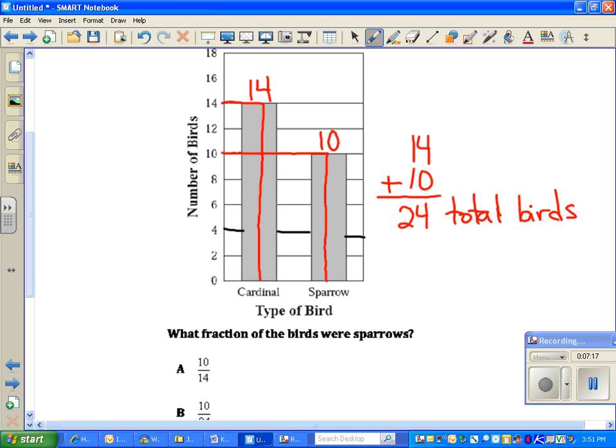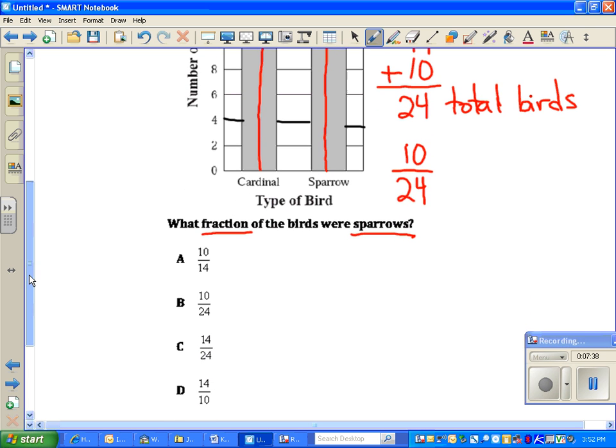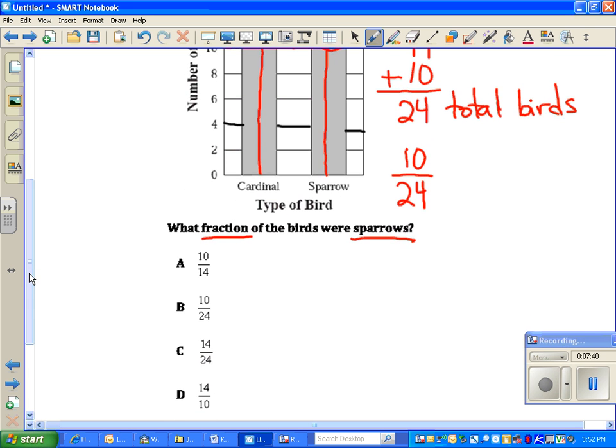But the question is looking for a fraction and it's talking about the sparrows. So the sparrows, there were 10 of them. There were 10 out of 24. So let me see if 10 twenty-fourths is a choice. It might not be because I think I can reduce that number, but I actually see 10 twenty-fourths as choice B. So I don't have to reduce. My answer is already there. Choice B, 10 twenty-fourths of the birds are sparrows.